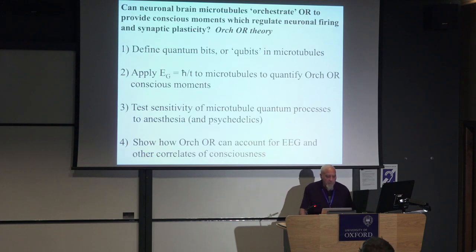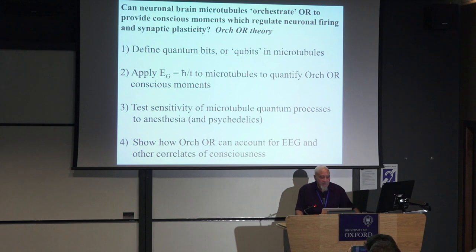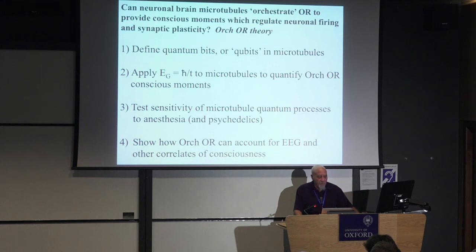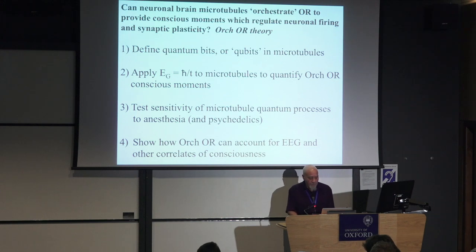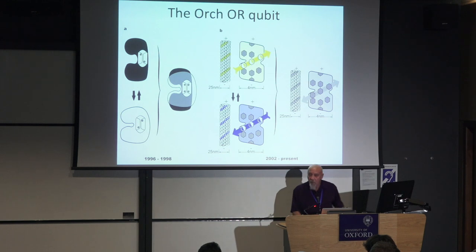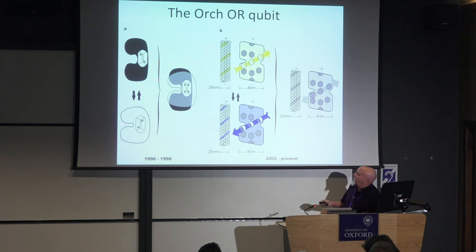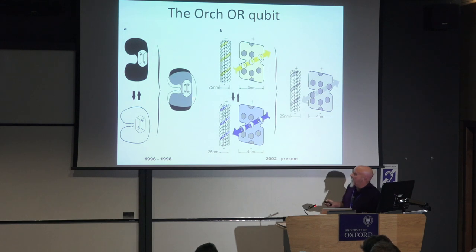Can neuronal brain microtubules orchestrate OR to provide conscious moments which regulate neuronal firing and synaptic plasticity? This is the ORC-OR theory. We had a number of things to do: define the quantum bit or qubit in a microtubule, apply E-sub-G equals H over T to microtubules to quantify ORC-OR, test sensitivity to anesthesia and psychedelics, and show how it could account for EEG. Initially we thought the qubit would be the conformational state of a tubulin.